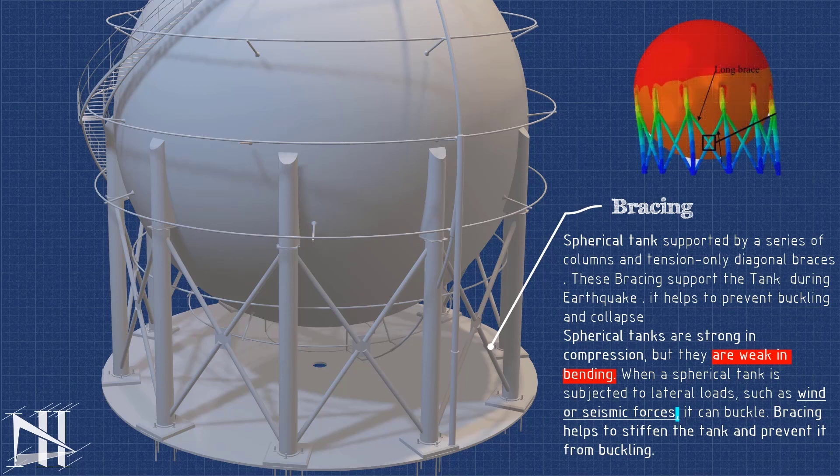Spherical tanks are strong in compression, but they are weak in bending. This means that they can withstand a lot of weight, but they are not very good at resisting forces that try to bend them. Bracing helps to counteract this weakness and makes the tank more structurally sound.